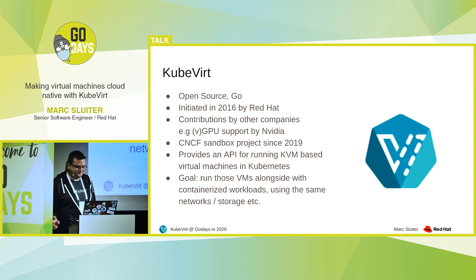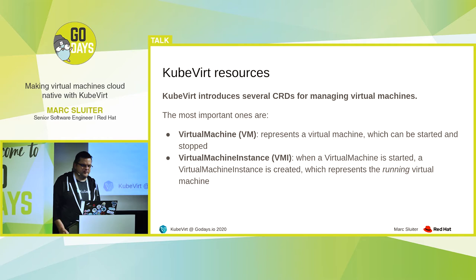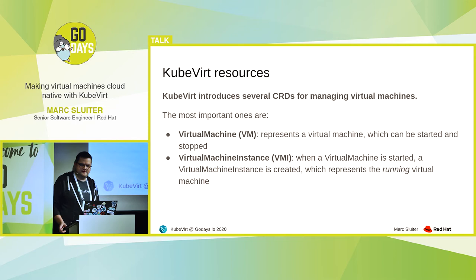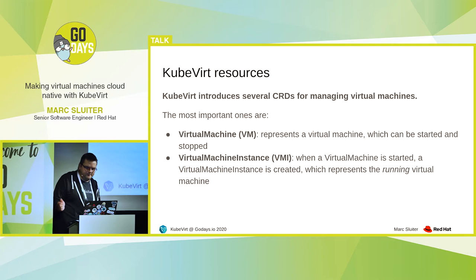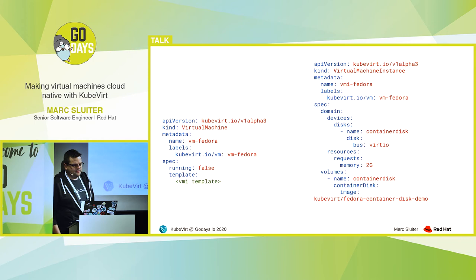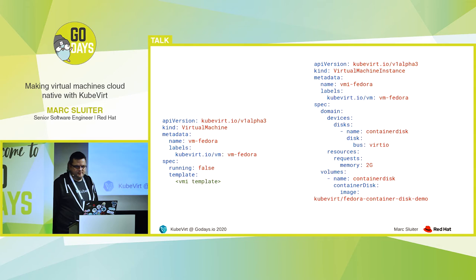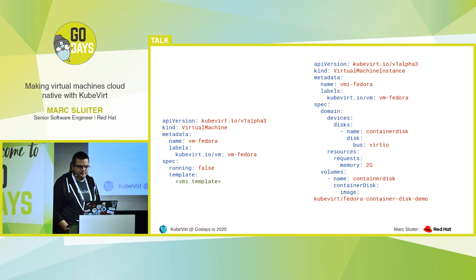So what resources does KubeVirt offer? The two most important ones are virtual machines and virtual machine instances. The virtual machine resource represents a virtual machine which can be started and stopped. And the virtual machine instance actually represents the running virtual machine — this is a bit like scaling a deployment with zero or one replica. If you are familiar with libvirt, which is used for running KVM-based virtual machines, you will see the domain spec where you declare which devices you want to have in your virtual machine, and these are later mapped into the domain spec for libvirt.